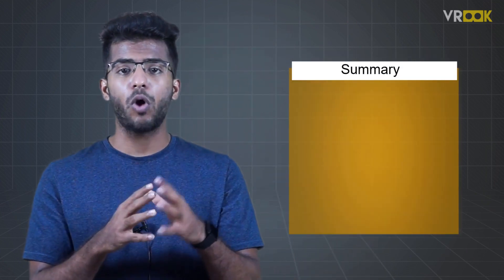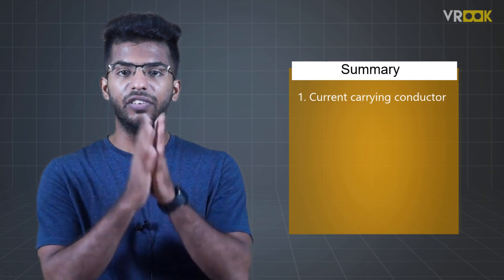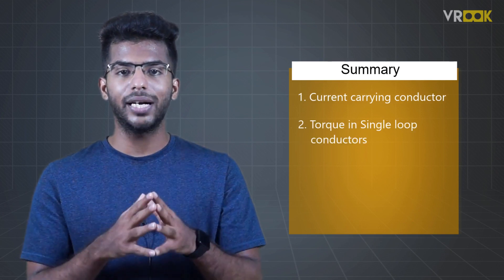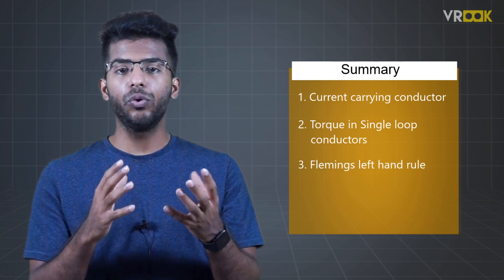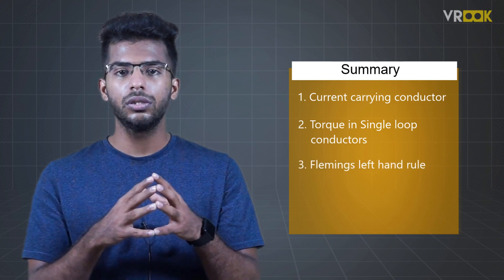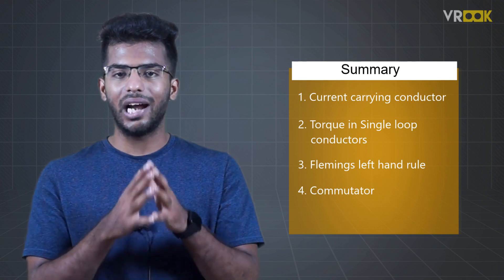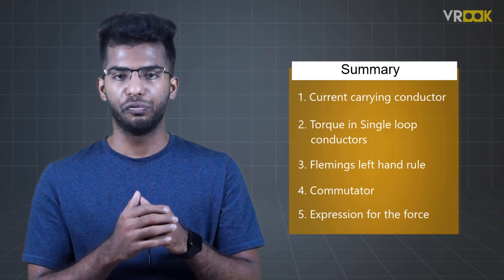To sum up, we learnt about the current carrying conductor which experiences a mechanical force, torque in single loop conductors, Fleming's left-hand rule to know the direction of motion, commutator which maintains unidirectional current and finally, the expression for the force. In the next video, we'll learn about the characteristics of motors. See you there.